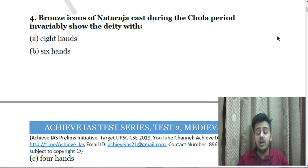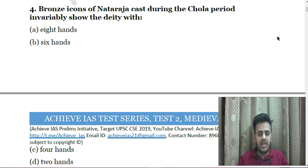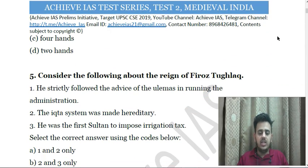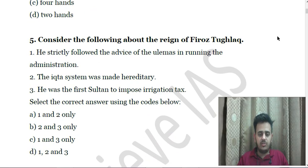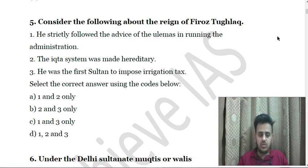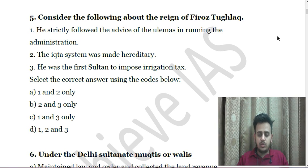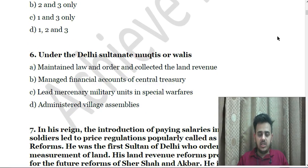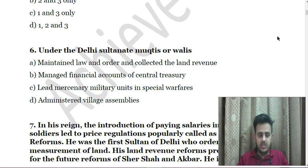Next question: Bronze icons of Nataraja cast during the Chola period invariably show the deity with — A. Eight hands, B. Six hands, C. Four hands, D. Two hands. Next: Consider the following about the reign of Firuz Shah Tughlaq — First, he strictly followed the advice of ulemas in running the administration. Second, the Iqta system was made hereditary. Third, he was the first sultan to impose irrigation tax. Choose the correct answer.